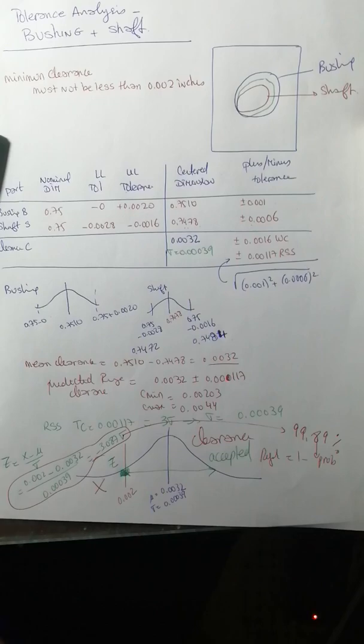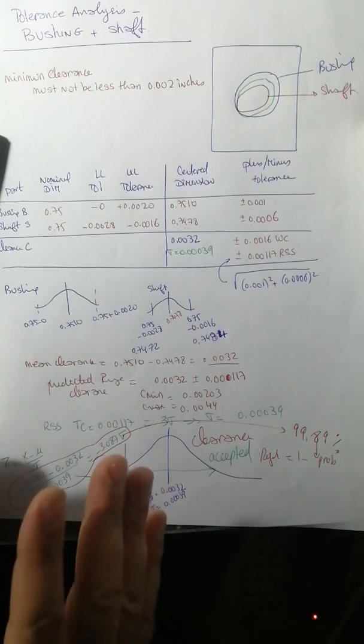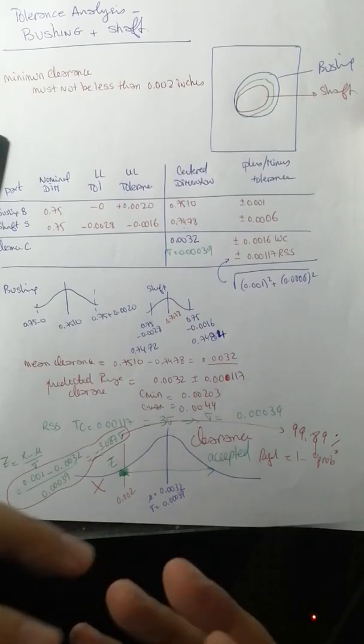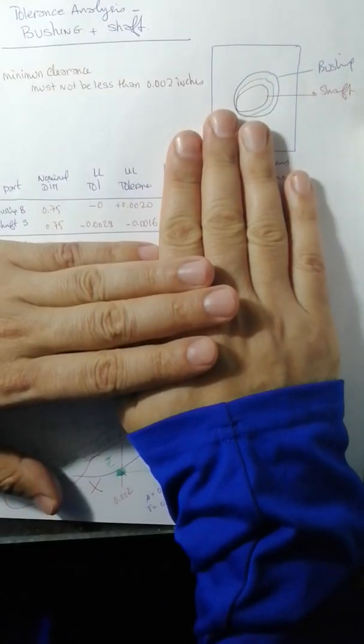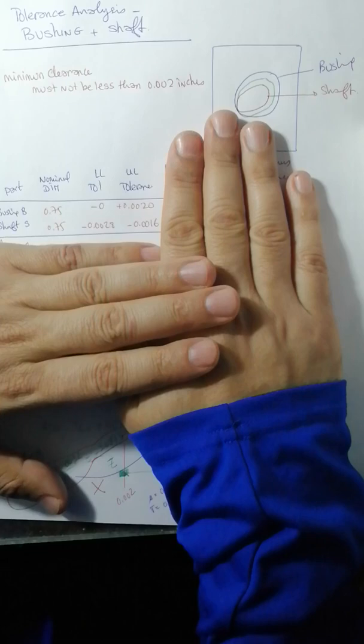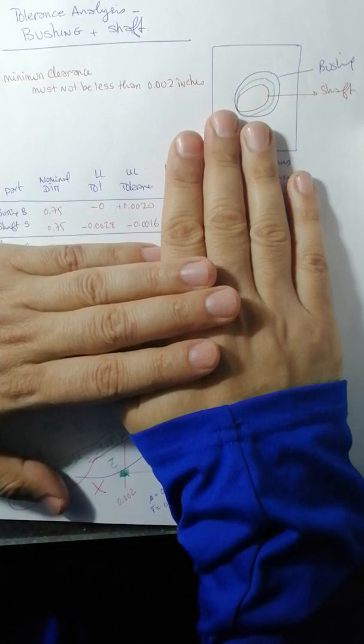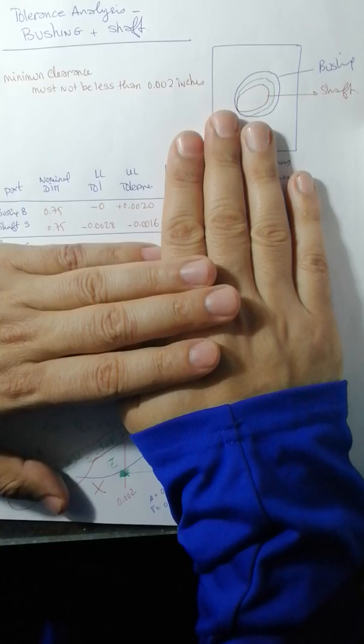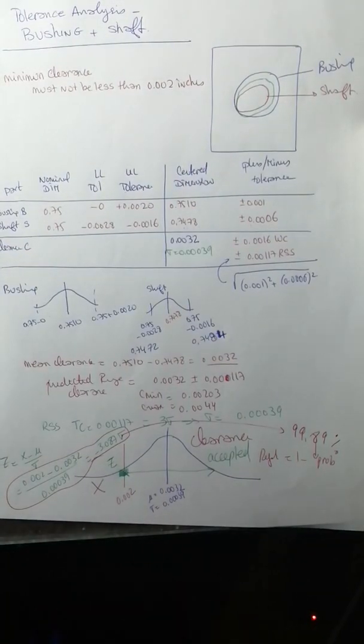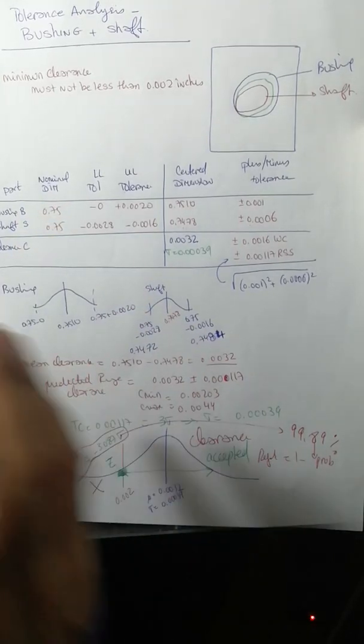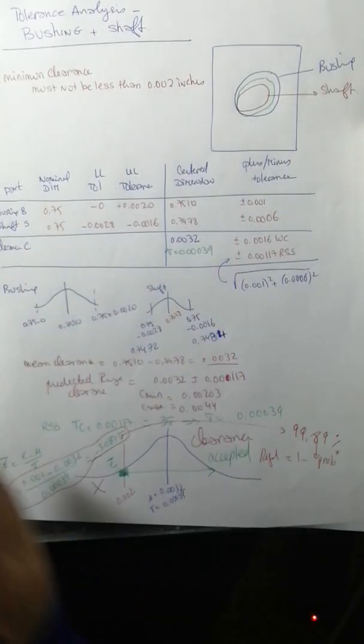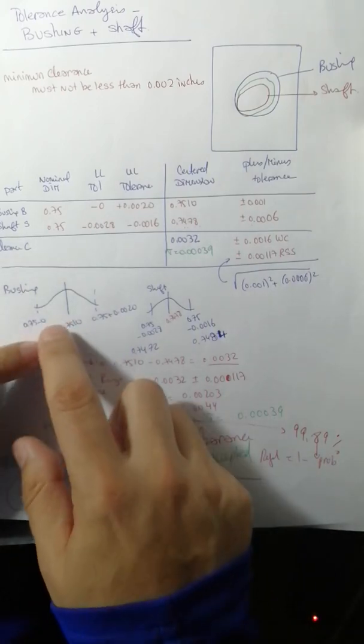Let's recap what we did here. We need to find the tolerance analysis of inserting a shaft in a bushing. We bought both items from a shop and were given this information. Although the nominal dimension is 0.75, with lower level minus 0 and upper level 0.002 for the bushing, and 0.75 minus 0.0028 to minus 0.0016 for the shaft, we don't just consider the nominal dimensions as is.